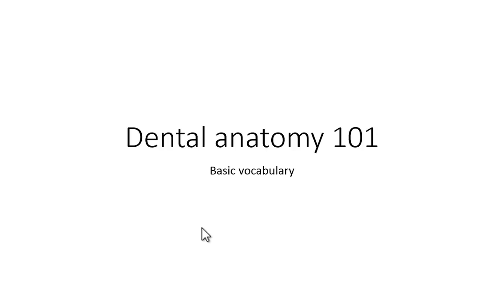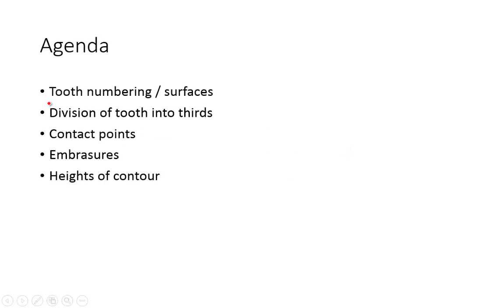Today we're going to be talking about basic vocabulary that we use to describe dental anatomy. That way, next time when we talk about individual teeth, we know what words or terms to use to describe the teeth. Today we're going to go over, very quickly, tooth numbering and surfaces. Then we're going to divide teeth into thirds, and with those thirds we're going to be able to describe contact points, embrasures, and heights of contours.